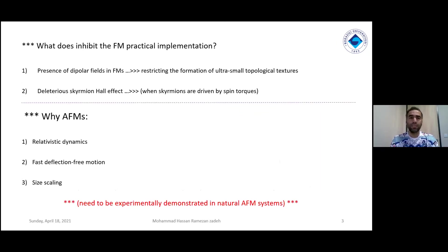Antiferromagnets - what does inhibit the ferromagnetic practical implementation? Two answers are the presence of dipole effects in ferromagnetic materials and also the deleterious skyrmion Hall effect. Why we are interested in antiferromagnets? Relativistic dynamics, fast deflection-free motion and size scaling, which they need to be experimentally demonstrated.